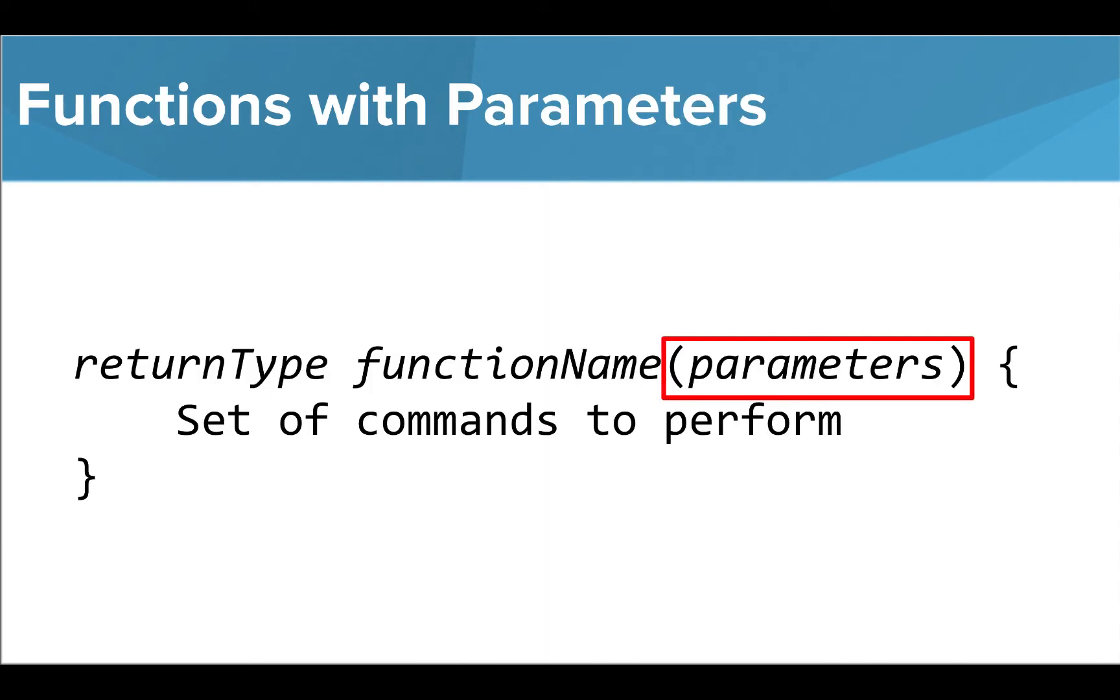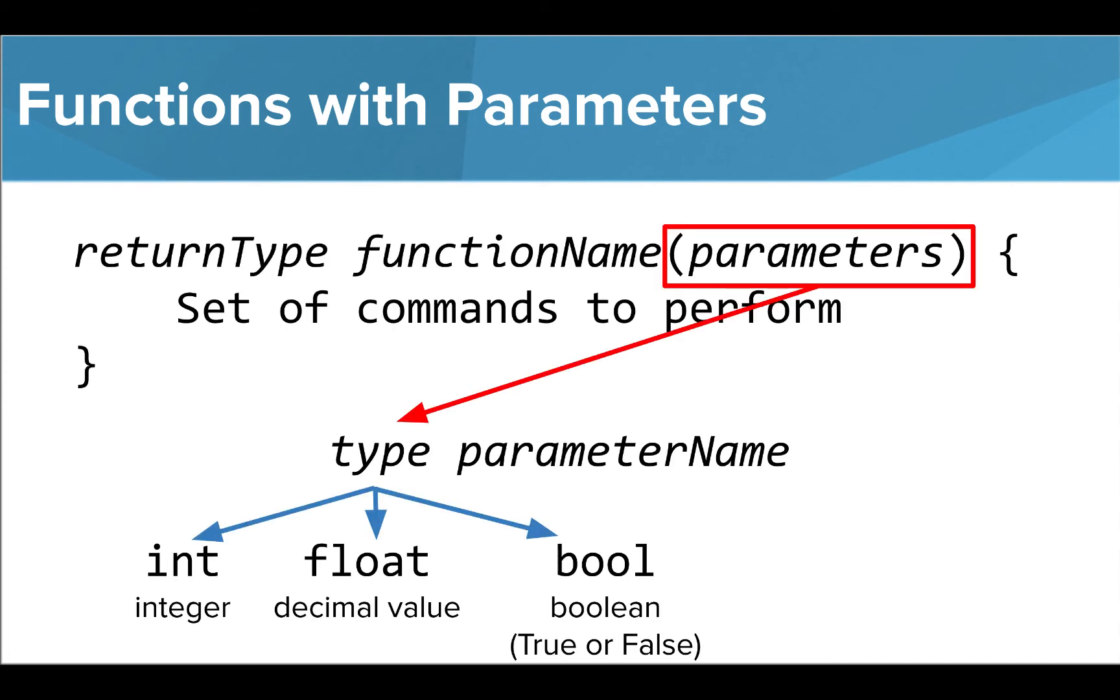If we want to include parameters in our functions, we need to write them in a specific way that is a bit different than you may have previously seen. We first write the type of our parameter value, similar to how we introduce variables.